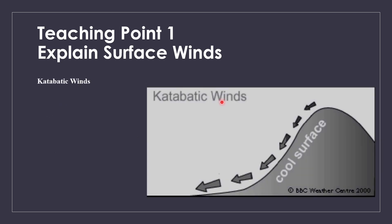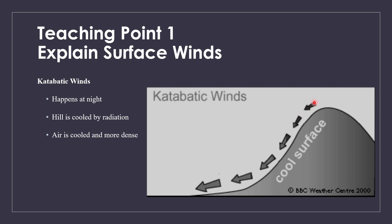For katabatic winds, it's basically exactly the opposite. It happens at night — the hill is cooled by radiation, and when the surface is cooled, the air around it is also cooled, gets more dense, and flows down the slope. A good way to remember this is a short story my instructor used to tell: Anna walks up the hill and pushes down the cat. Anna is the one that goes up the hill, and the cat is the one that goes down.